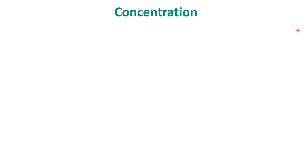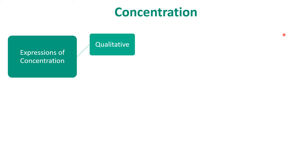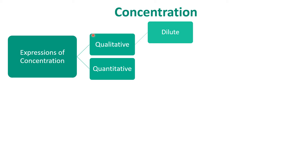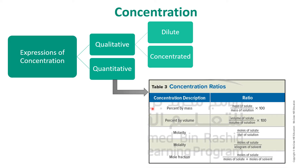To express concentration, we have two ways. First, qualitatively — we can say that a solution is dilute or concentrated. A dilute solution has fewer solute particles and more volume; a concentrated solution has more solute particles and less volume. Second, quantitatively or mathematically. We are going to study five ways: percent by mass, percent by volume, molarity, molality, and mole fraction. We will start with percent by mass.